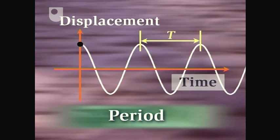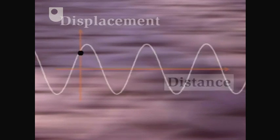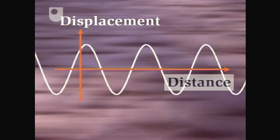This is the time it takes the spot to do one complete cycle. So what's the relationship between the period of a wave and its wavelength? Well, here's the displacement versus distance graph again.